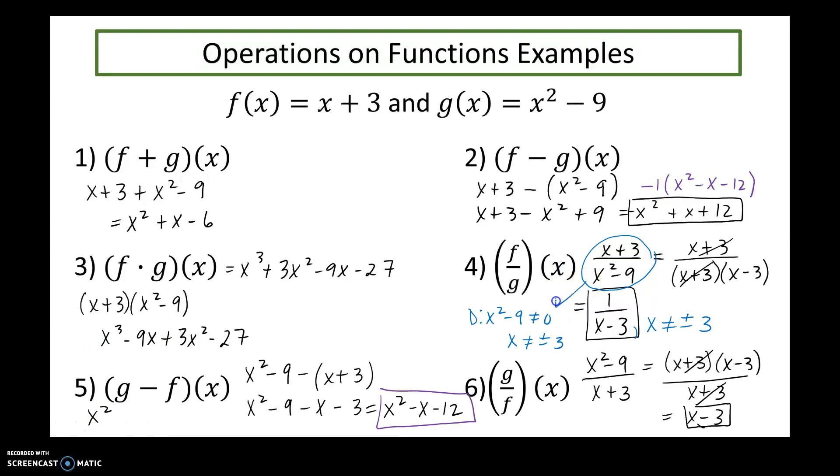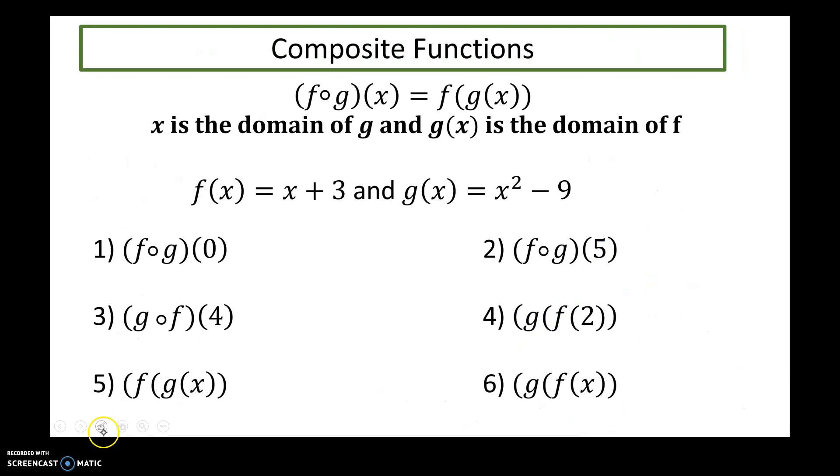So that's why we have to keep in mind what the domains are. Now when I look at number six, my only domain restriction, there's now just a linear function in the denominator, so now x can't equal negative three. So it's simplified to what looks like a linear function, but we have to make sure we keep in there the domain restriction that x cannot equal negative three.